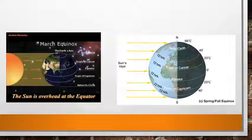On March 21st it is the spring season in the northern hemisphere. This equinox is referred to as the vernal equinox. The altitude of the midday sun is 90 degrees at the equator.